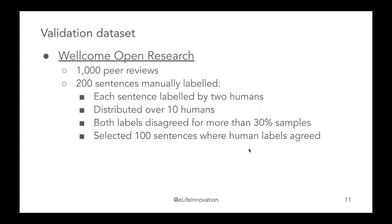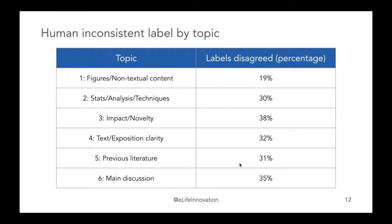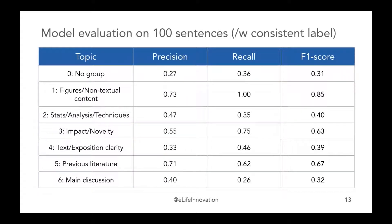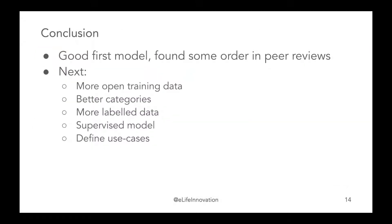One thing we found is that labeling is not so easy — two humans came up with different labels. By topic, there's less disagreement for 'figures' but impact and novelty categorization is less clear. This is also reflected in model performance: figures has the best score, others are not as great, but it's still not completely random. In conclusion, we have a good first model that can be improved further. Starting from unlabeled data, we created some labeled data, and to improve further we need more labeled data. Then we can look into supervised models and more specific use cases.